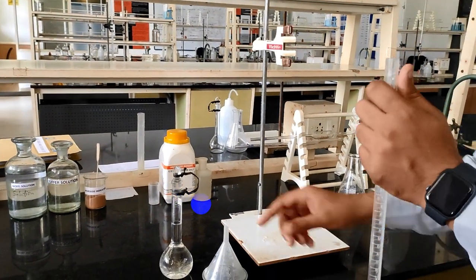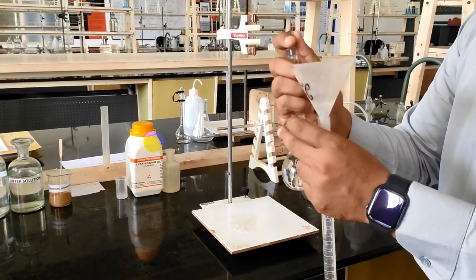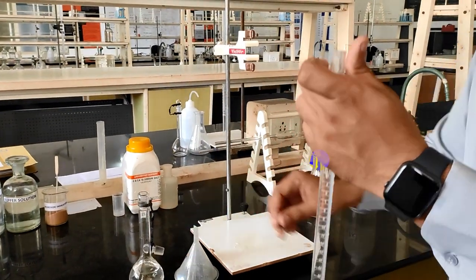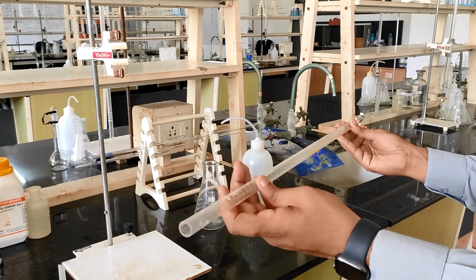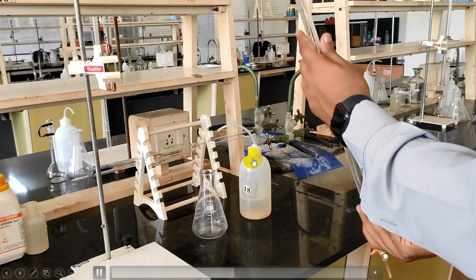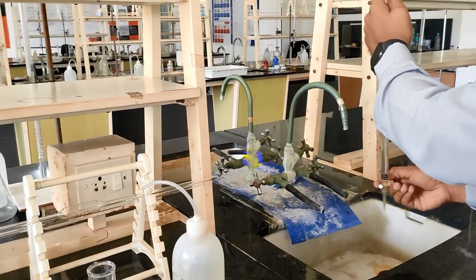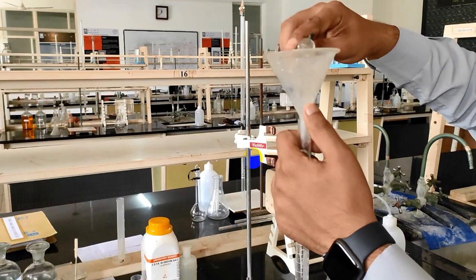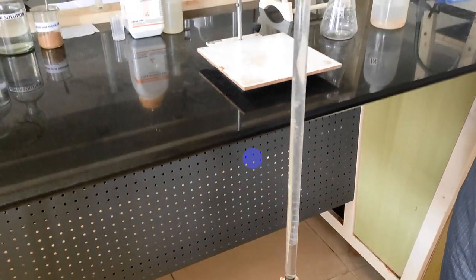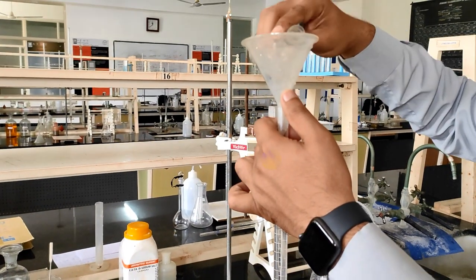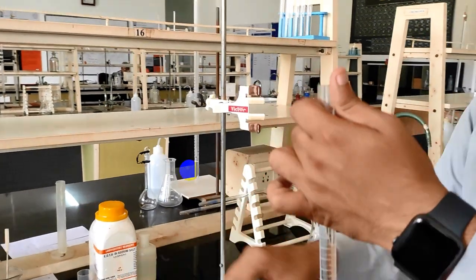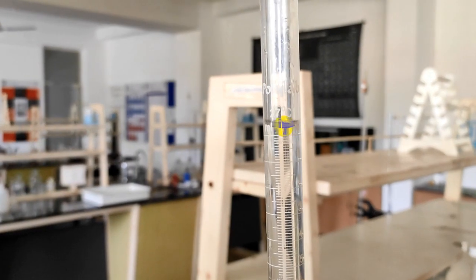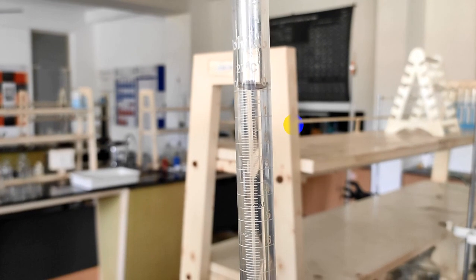You can calculate the normality using a formula. Fill the burette with standard EDTA solution. Before that, rinse the burette with EDTA. Hold the funnel up and fill the burette. Now the tip of the burette is also filled by standard solution.